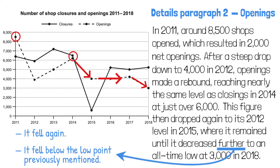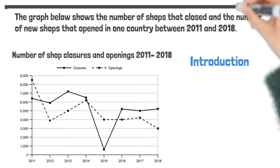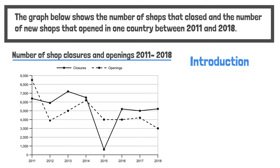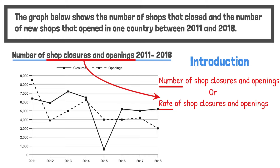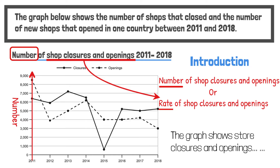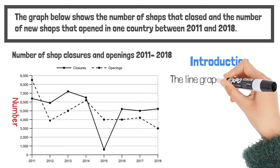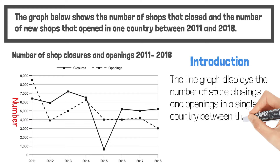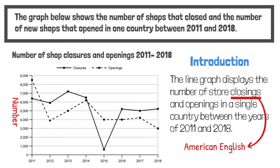Finally, the introductory paragraph. This paragraph should be a paraphrase of the introductory text of the line graph. I'll use the title of the graph to paraphrase it. 'Store closures and openings' could mean the number or rate of closures and openings. The title specifically says 'number,' to clarify that the y-axis shows number and not rate — so it's better to keep the word 'number.' For example: 'The line graph displays the number of store closings and openings in a single country between the years 2011 and 2018.' Note: 'closings' is American English while 'closures' is British English — choose only one to use in your essay.